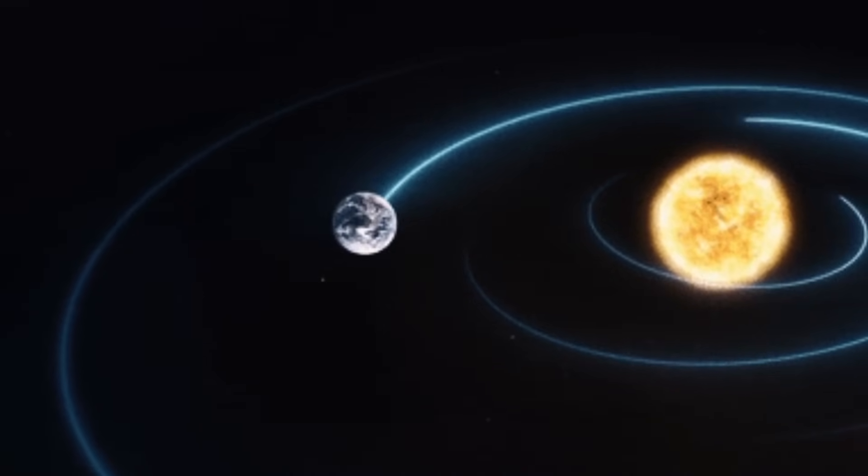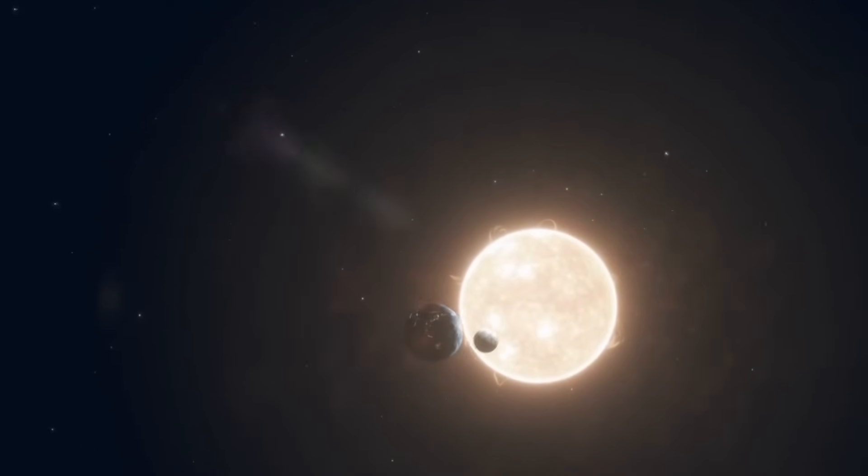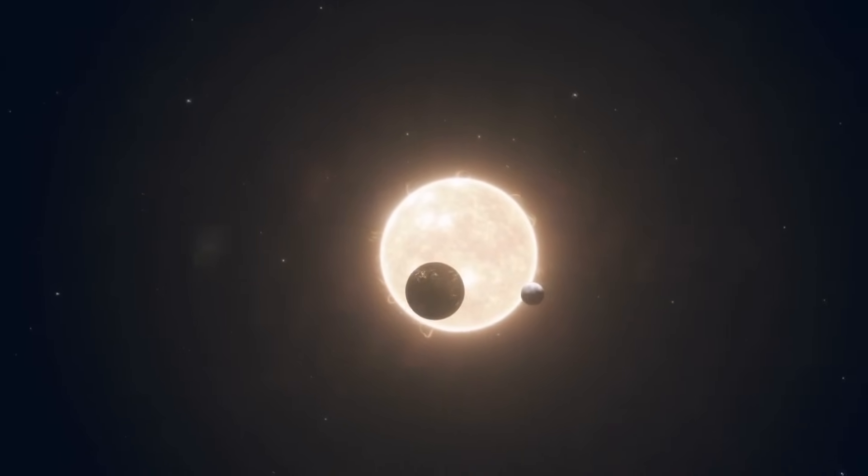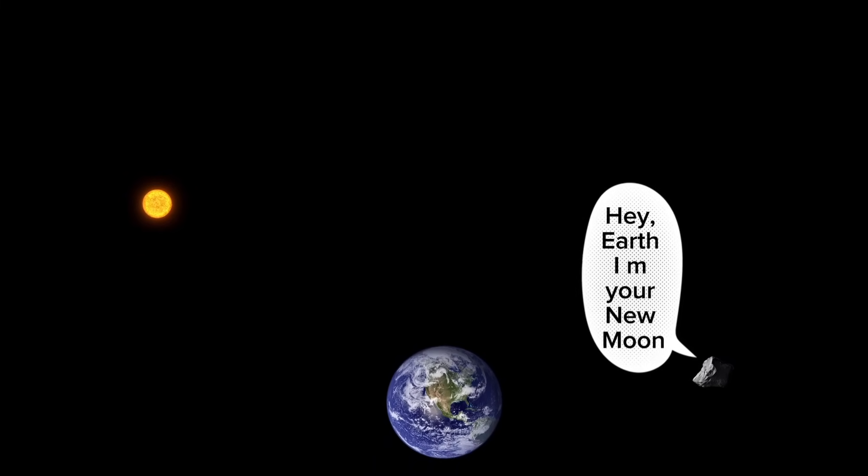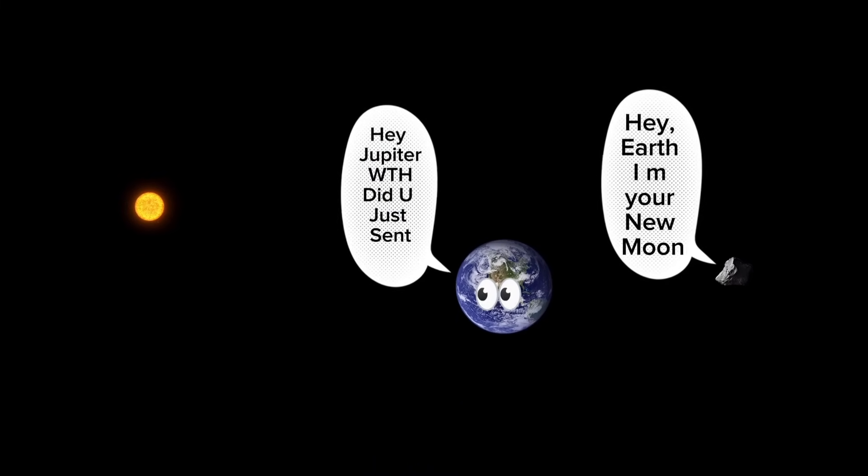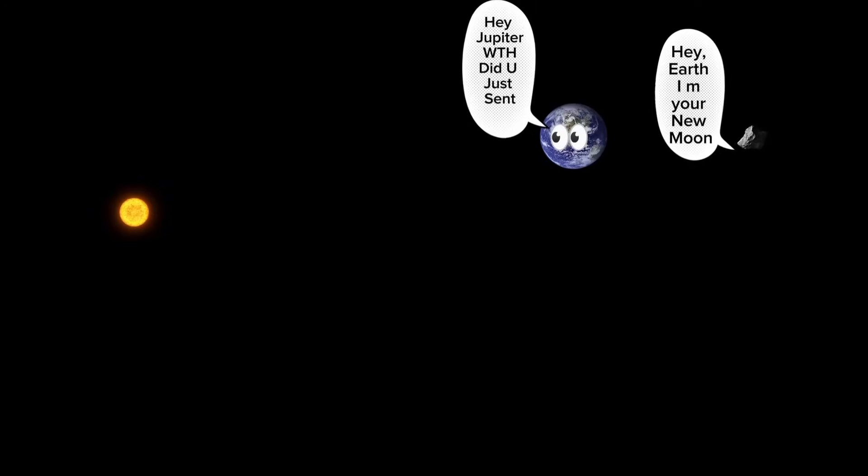Imagine our planet on a racetrack around the sun. For billions of years, we've orbited at roughly the same pace with our familiar moon circling us. Now picture another runner, much smaller, much dimmer, joining the lap, slightly off to the side yet keeping almost the same speed.